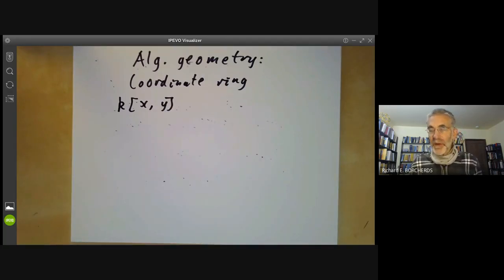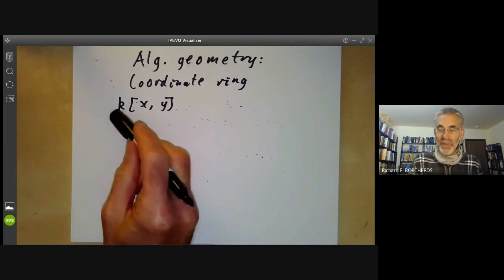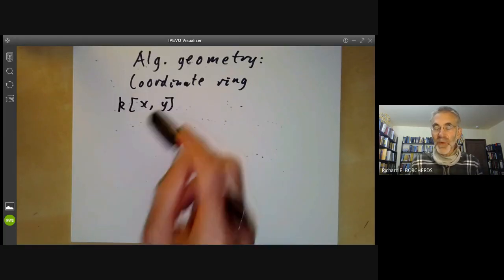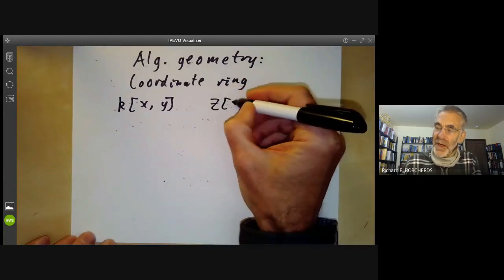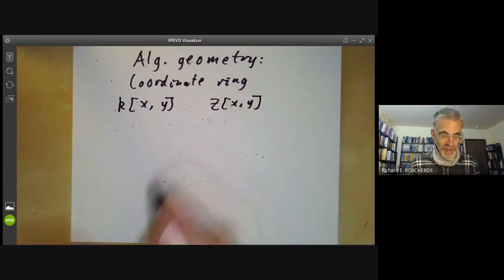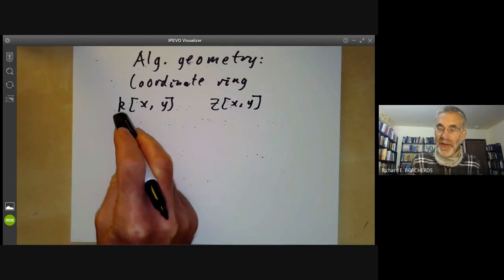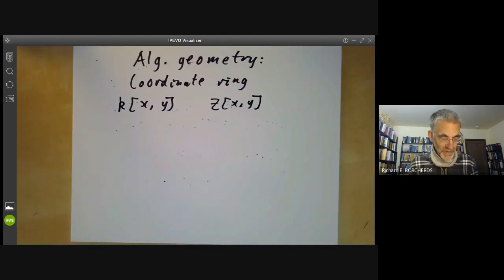In the early days of commutative algebra, this was really the only sort of ring people considered. Well, they would also consider polynomials over the integers. But commutative algebra basically meant theory of polynomials over a field.